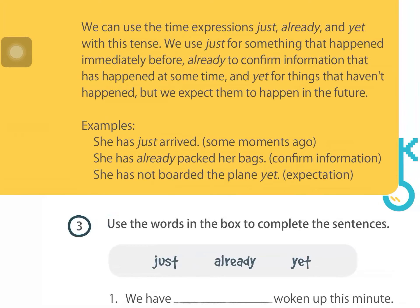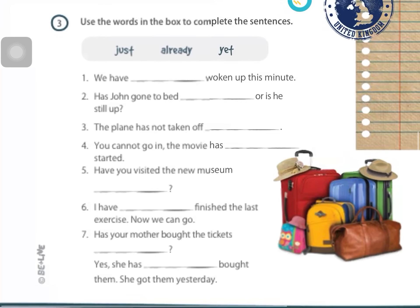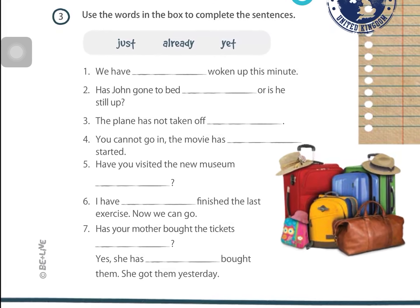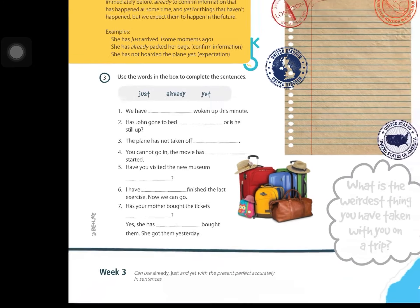In exercise 3, you have to use these three words to complete the seven sentences: 'just,' 'already,' and 'yet.' Remember: 'just' for something that happened a few moments ago, 'already' to confirm information, and 'yet' for negative sentences or questions about things that are going to happen in the future.